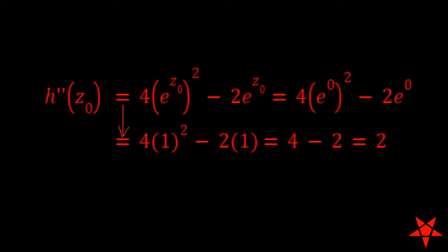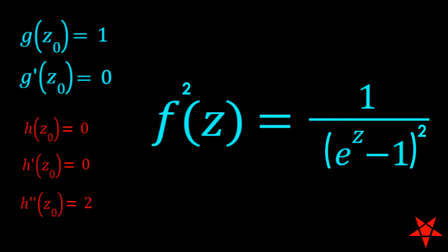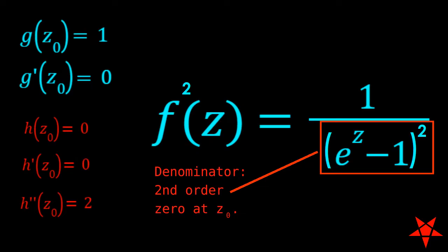With the values of h of 0, h prime of 0, and h double prime of 0, having established that the denominator in f of z squared contains a second order zero at z0, we now need to find a proper method for evaluating the residue.